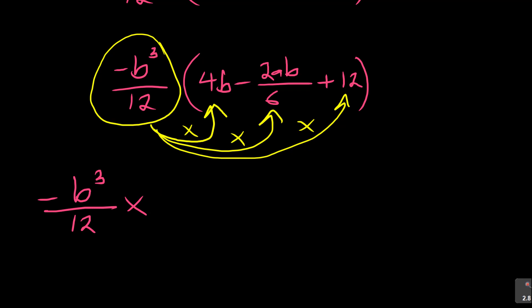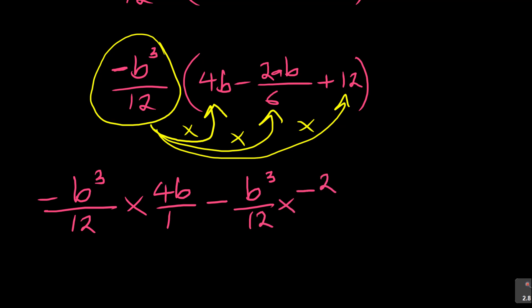To make things easier, write the 4b as 4b over 1, because you've got the fraction on the other side: b cubed over 12. That helps. Then look at the next term - the sign is negative. You can say minus, then: minus b cubed over 12, times negative 2ab over 6.